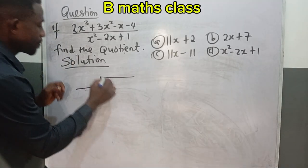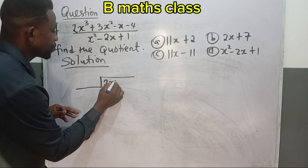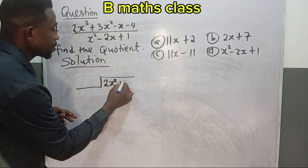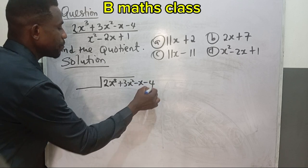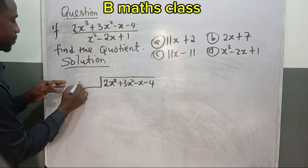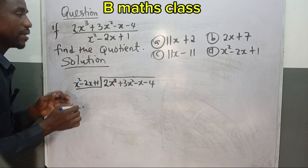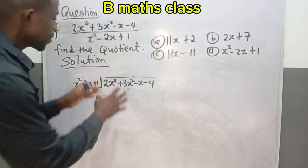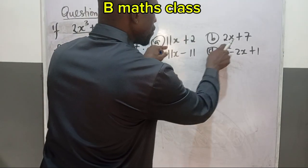So let's see, the dividend which is the polynomial is 2x³ + 3x² - x - 4, then x² - 2x + 1. Now for those writing JAMB, you don't need to solve this to the end. When you look at the options you have 11x + 2, 2x + 7, 11x - 11, x² - 2x + 1.